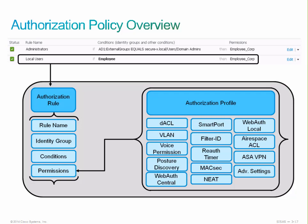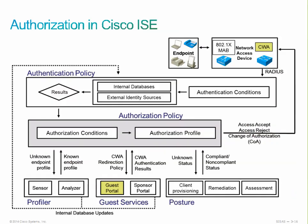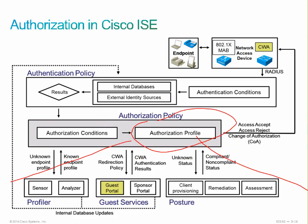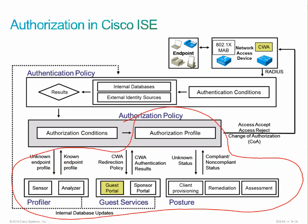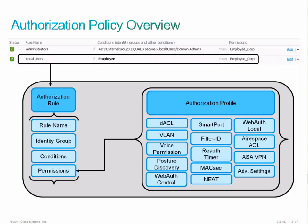ICE is an attribute-based policy system. Identity groups and conditions define what attributes are important for making policy decisions. Authorization profiles, based on rule permissions, specify the results of that policy decision. The output of an authorization profile could include access accept, access reject, or change of authorization — these are the pieces that result from applying the authorization profile.